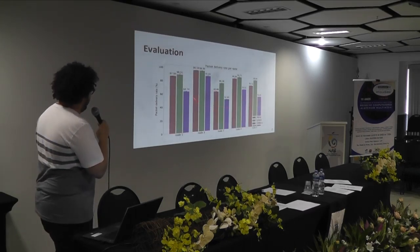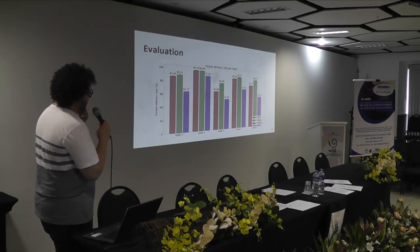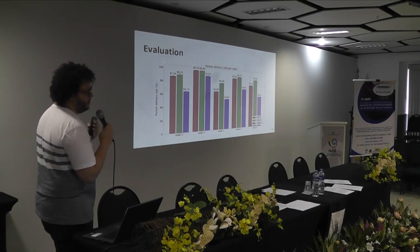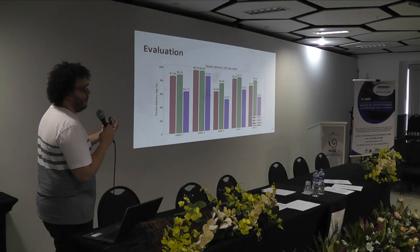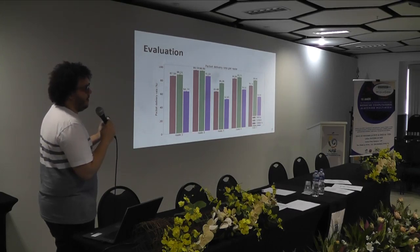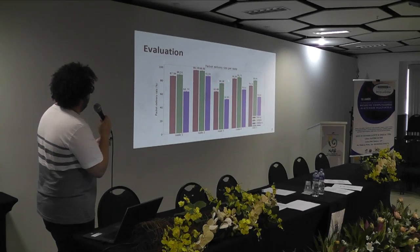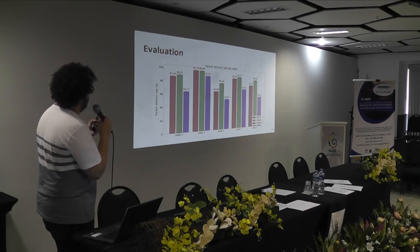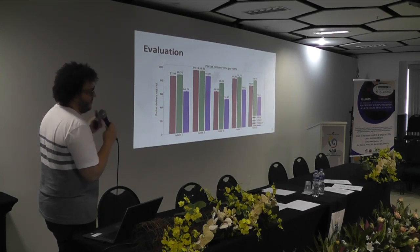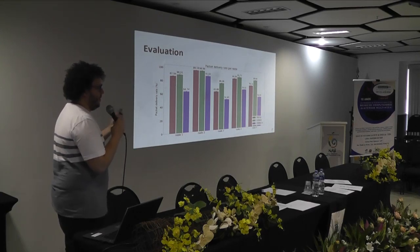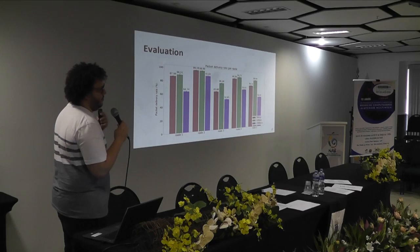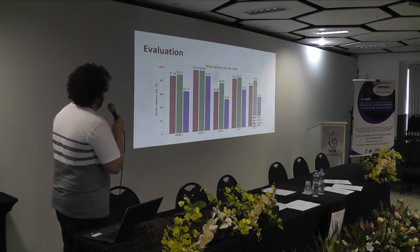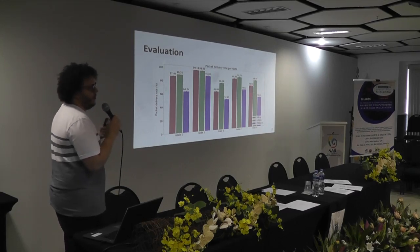Here we can see the packet delivery rate per node. The worst nodes — those with the worst channels — have increased their PDR heavily with our proposal. In node 3, the proposal achieved around 80% PDR, while the other methods were under 65% delivery rate. In node 5, also a bad node to transmit from, we have a gain of over 10% compared to polling.